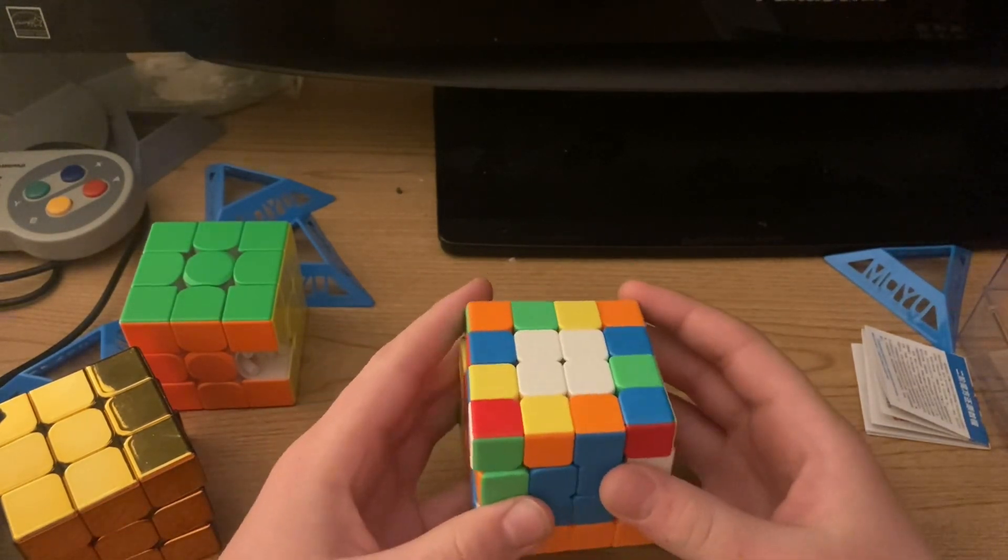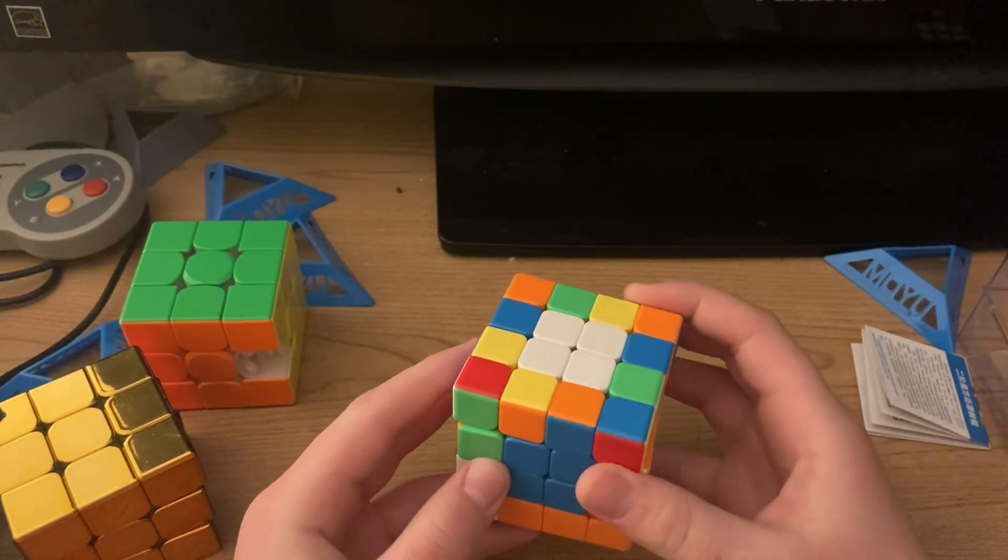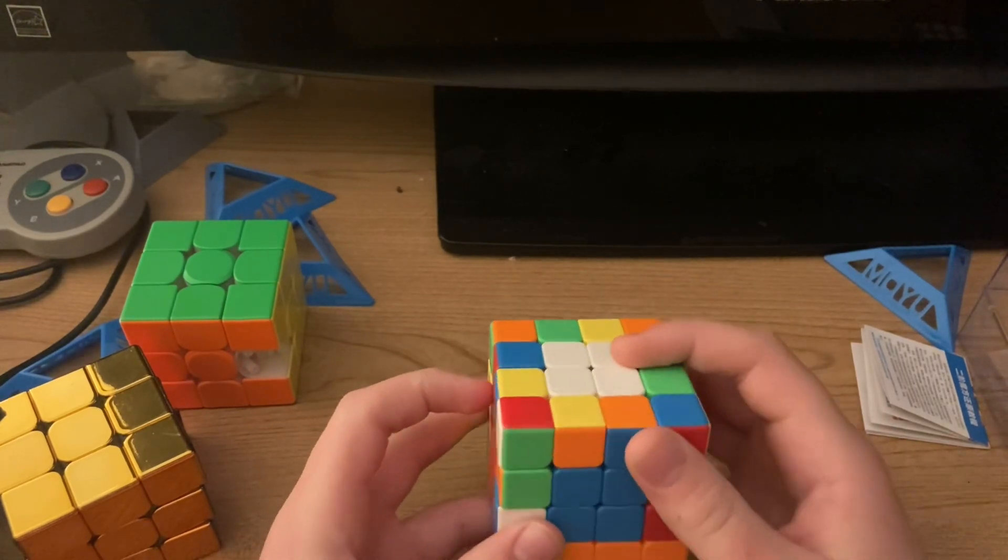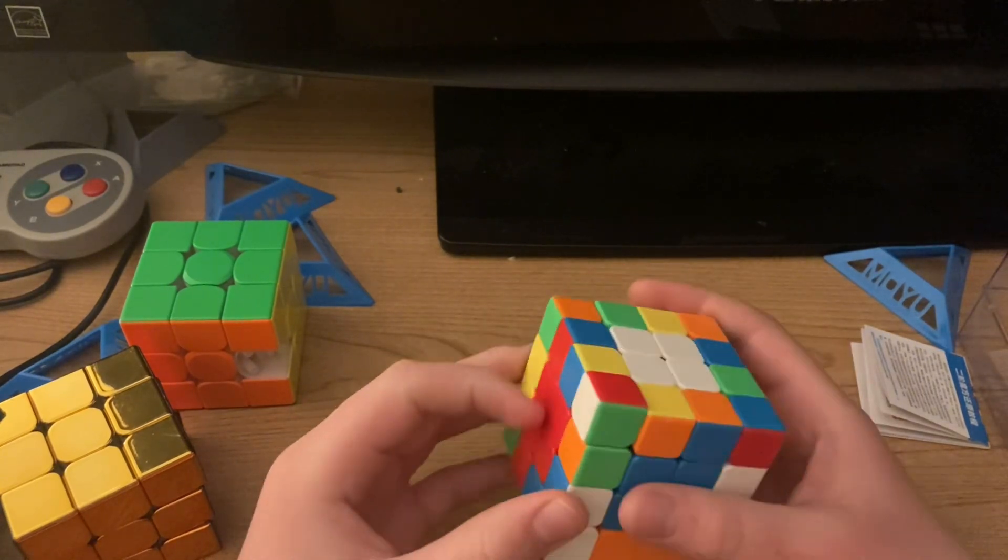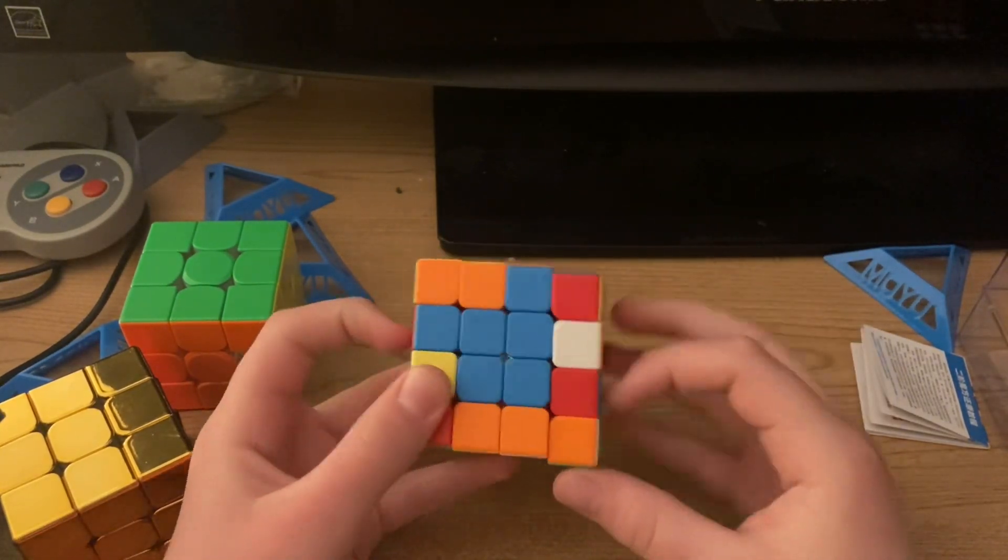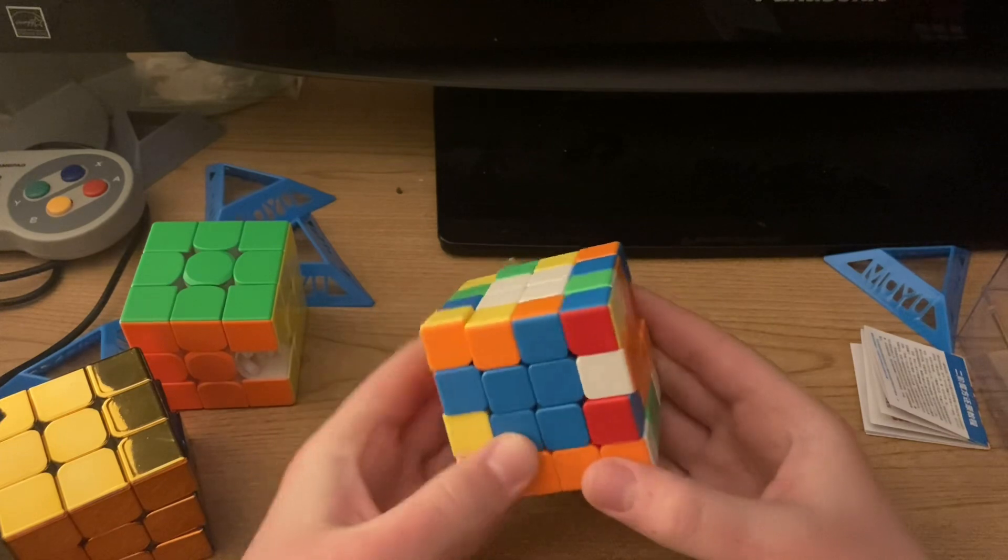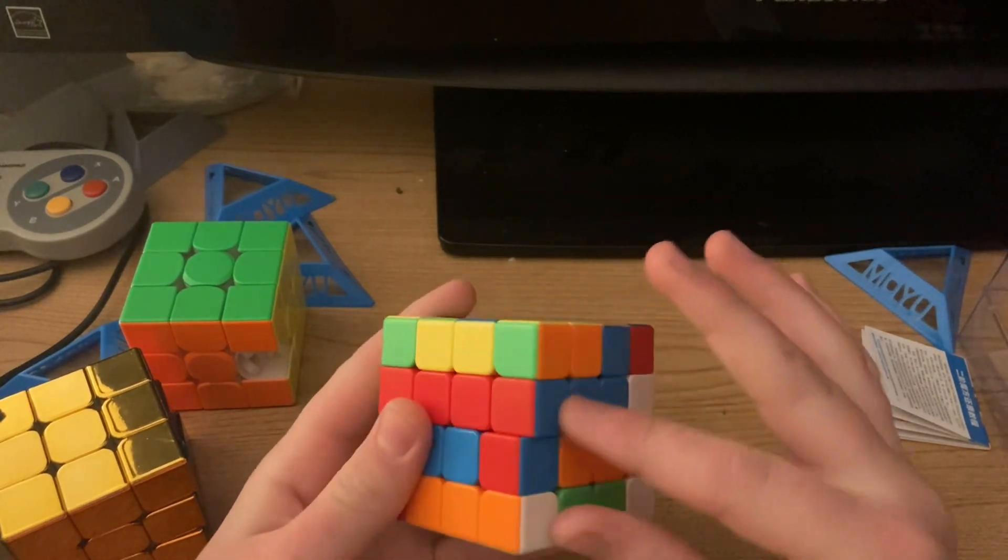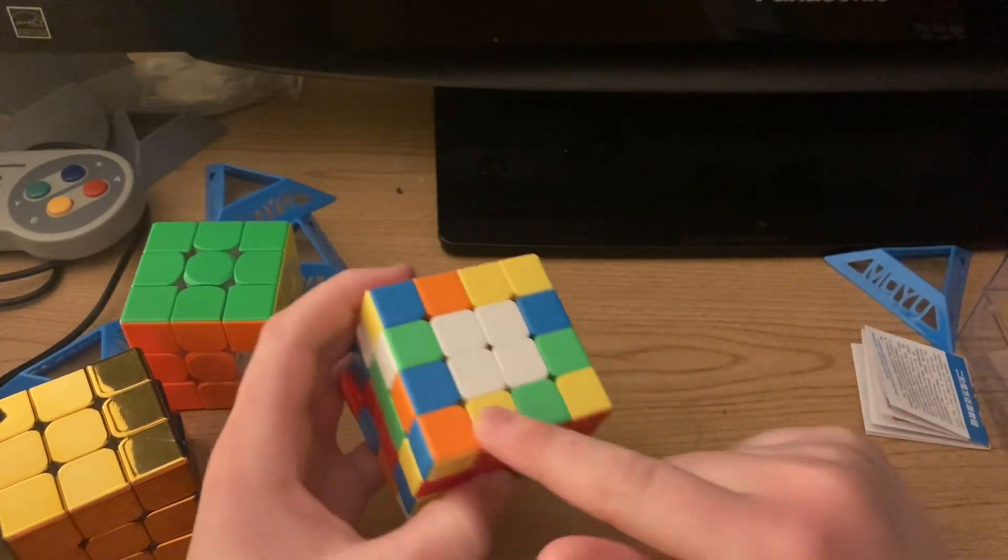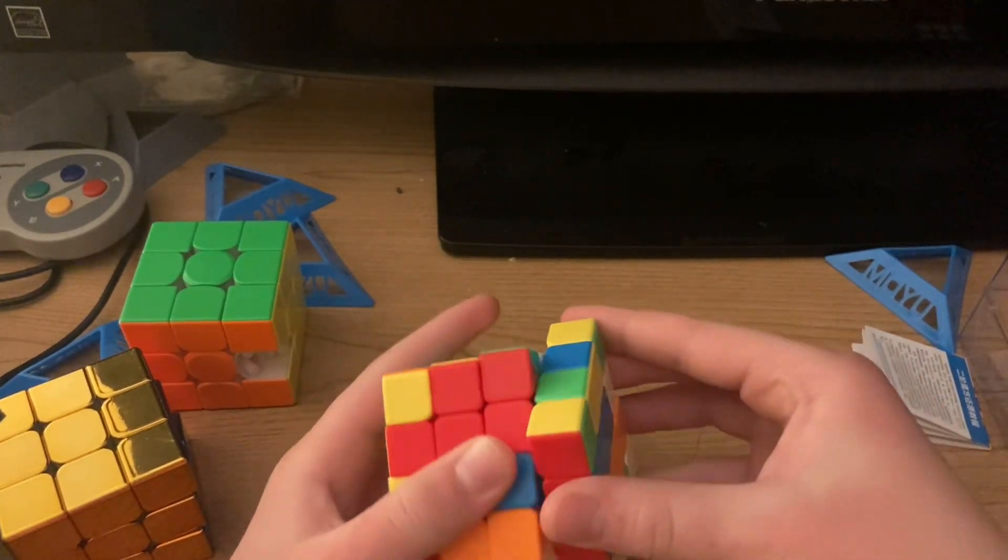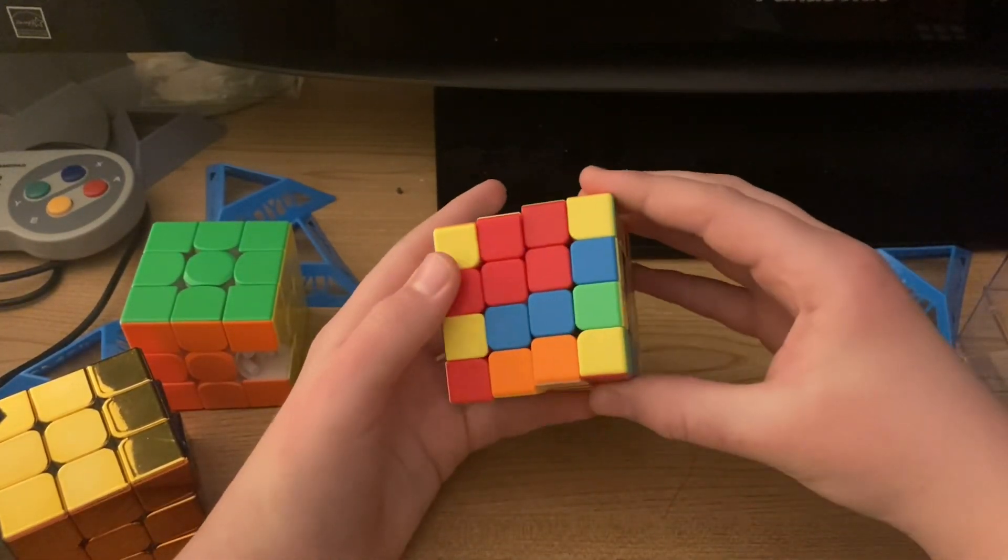If you have a 3x3, you could just pick that color scheme. This is the correct color scheme. If you do any other color scheme, it's incorrect and then you'll get F2L parity. Next step is edge pairing.